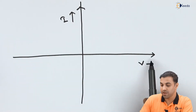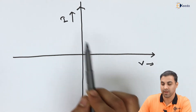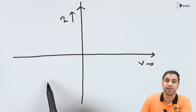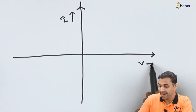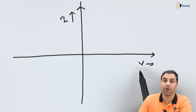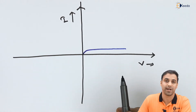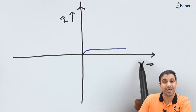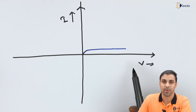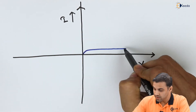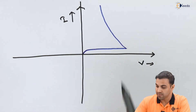Now let's talk about the VI characteristics of a DIAC, which is very important from the exam point of view. Let this be the voltage axis and this be the current axis. The first quadrant represents the forward biased condition and the third quadrant the reverse biased condition. When we increase the voltage and the diode is forward biased, there will be a small leakage current. When the voltage reaches the breakover voltage, suddenly the current rises.